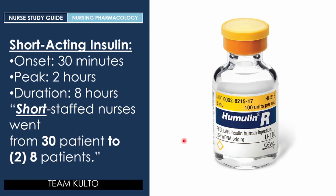Short-acting insulin: onset is 30 minutes post-administration, peak is two hours post-administration — when you can expect hypoglycemia — and duration is eight hours. To remember this, use the phrase: 'Short-staffed nurses went from 30 patients to eight patients.' Short is for short-acting; 30 is your 30-minute onset; two is your two-hour peak; and eight patients means eight hours duration.